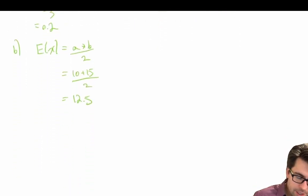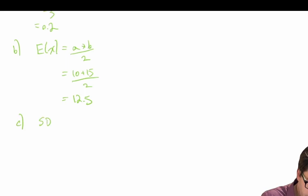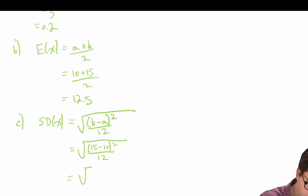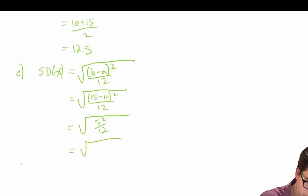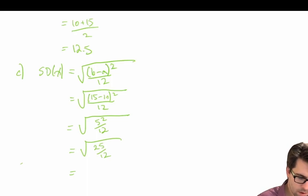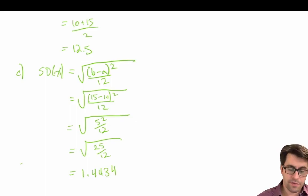For part c, we compute the standard deviation: the square root of (b minus a) squared divided by 12. That's the square root of (15 minus 10) squared divided by 12, which equals the square root of 25 divided by 12, giving us 1.4434.